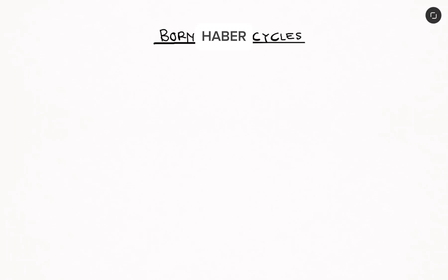In this video, I want us to talk about the Born-Haber cycle. In your previous studies, you did talk about various kinds of enthalpy changes, and then you talked about Hess's law of constant heat summation. You also talked about lattice energy, and the Born-Haber cycle is a diagram that you can use to easily determine what the lattice energy is. Lattice energy simply is an energy change involved when we have gaseous ions combining to form an ionic compound.